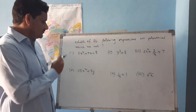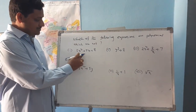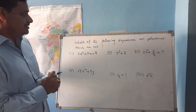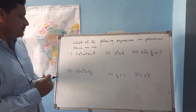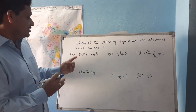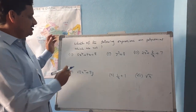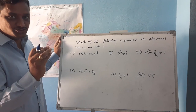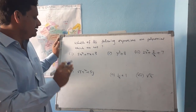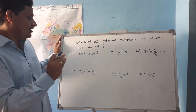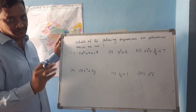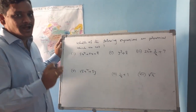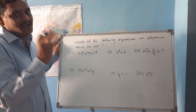To check whether an expression is a polynomial, we have to remember three points. One: the coefficients should be real numbers. Two: the power of the variable should be non-negative — meaning it should not be negative and it should not be a fraction.